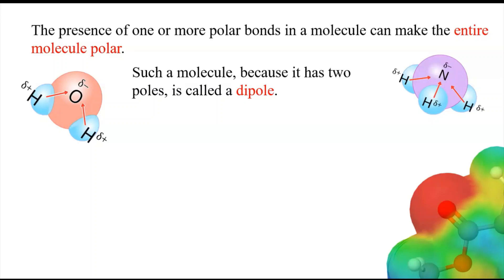With the water, it's the oxygen, and with the ammonia, it's the nitrogen that's pulling the electrons away from the more non-electronegative atoms. If you get a molecule like this where the entire molecule is polar, it's called a dipole.